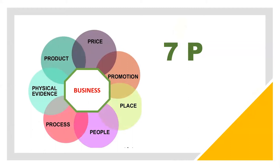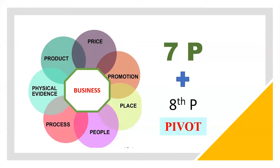There's another dimension to look at your business: the seven P's — Product, Price, Promotion, Place, People, Process, and Proof (physical evidence). These seven drive your sales and marketing. But now we need to add one more P: Pivot. Pivot means to turn — it can be a small turn, a full turn, or a U-turn depending on your business. This eighth P can be applied across all the original seven P's.